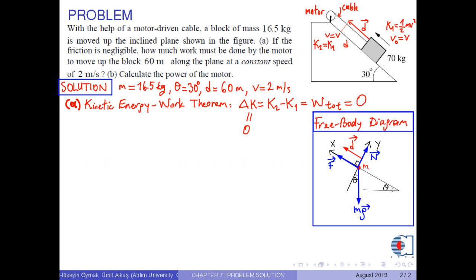Now, using the free body diagram of the block, we can find the work done by each force. According to the figure, the work done by the gravitational force is Wg equals m times g dot d. Since the angle between the vectors is 90 degrees plus theta, we have m times g times d times cosine of 90 degrees plus theta.